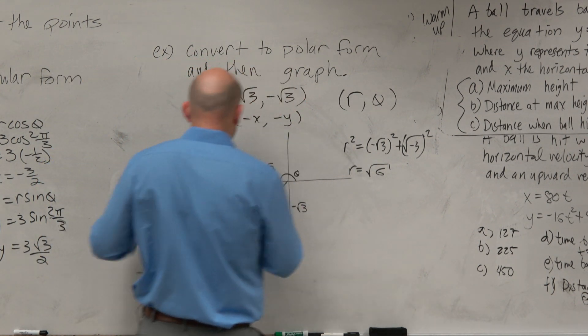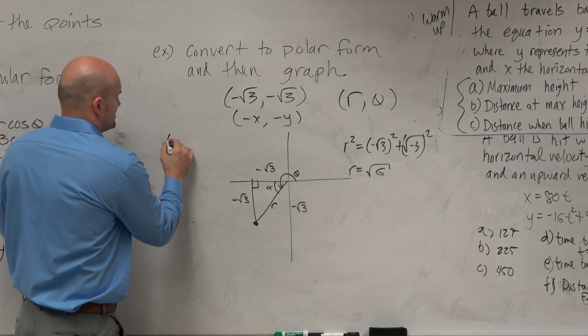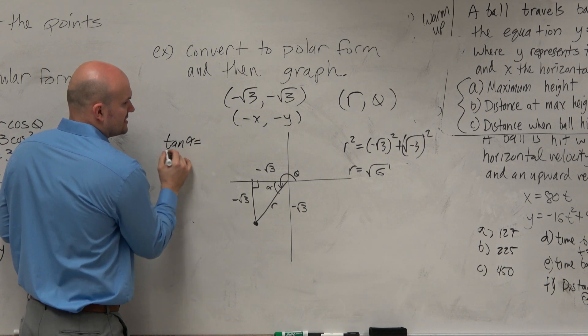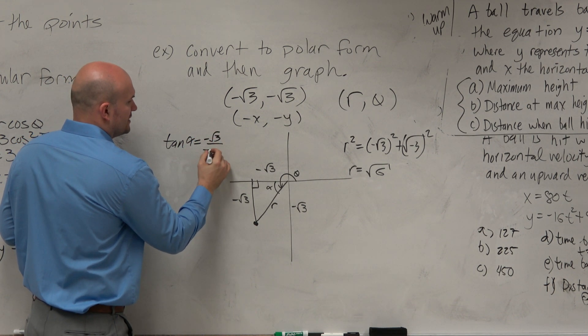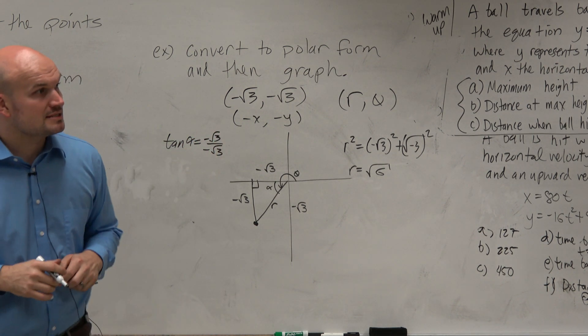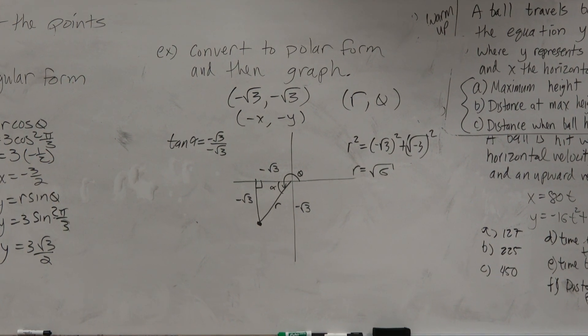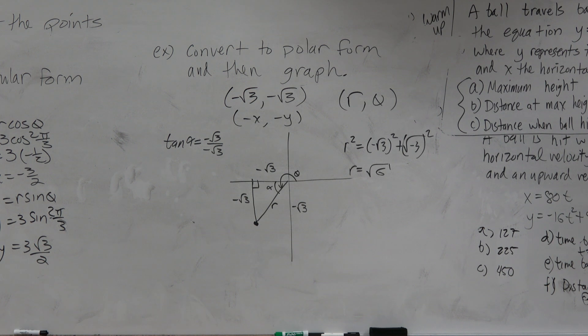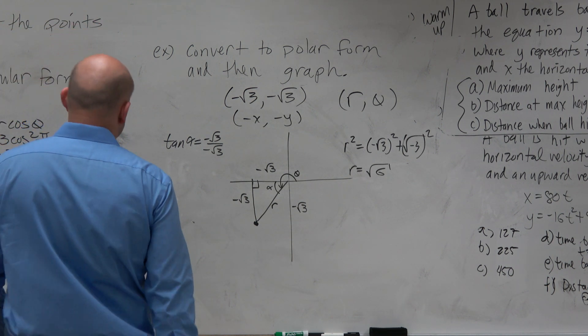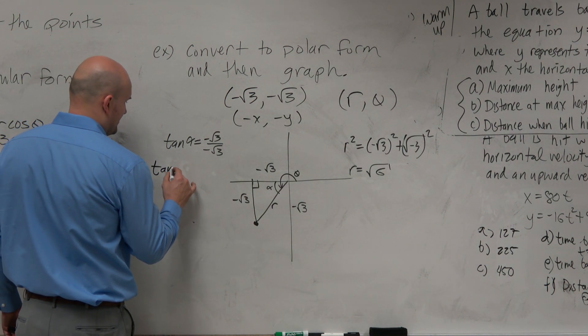That would just be, hopefully I have enough room over here. I can just say tangent of alpha is equal to negative square root of 3 over negative square root of 3. Yes? Could you just know that since there is a number that it's 45? I would hope some people would make that connection. Not everybody remembers that. But yes, that's exactly what I would hope you guys would.